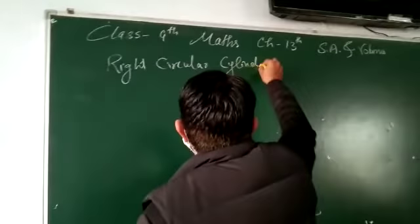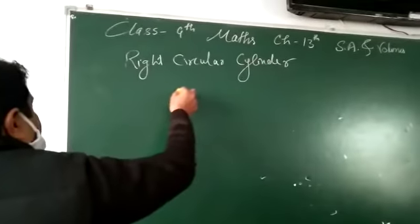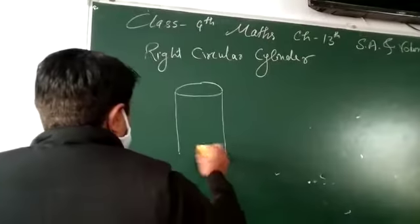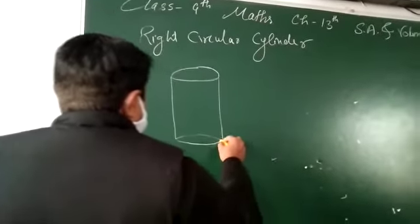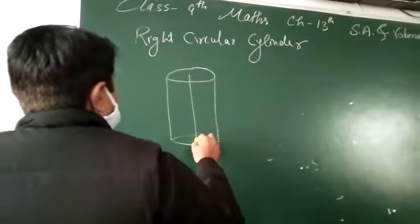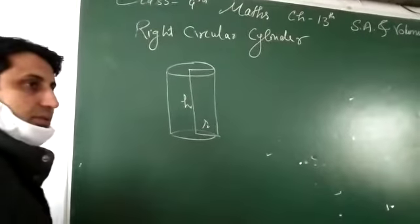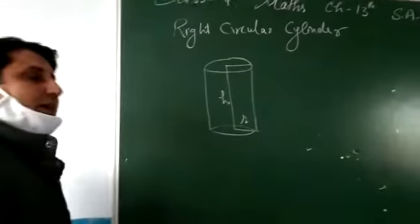We have a right circular cylinder. First of all, the dimensions of the right circular cylinder are radius and height. Radius and height.